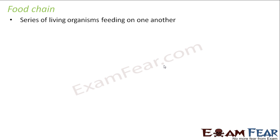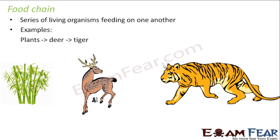So what is a food chain? The word chain means many small objects connected together forming a long rope-like structure — that is a chain. So a series of living organisms feeding on one another is known as a food chain. Let us look at an example so that the concept becomes clearer. For example: plants, deer, tiger.